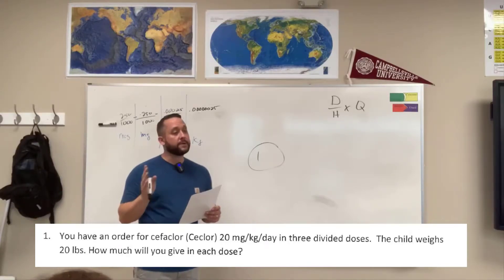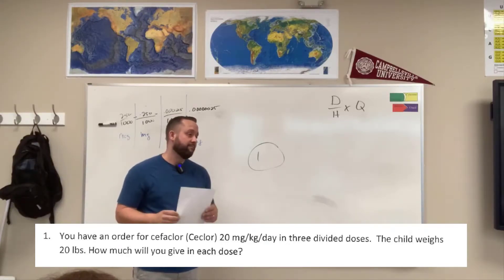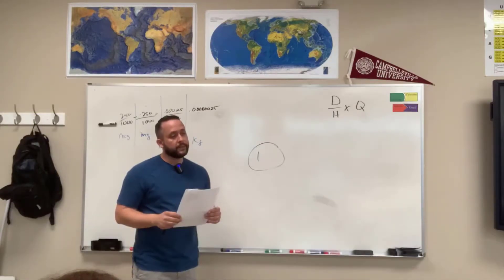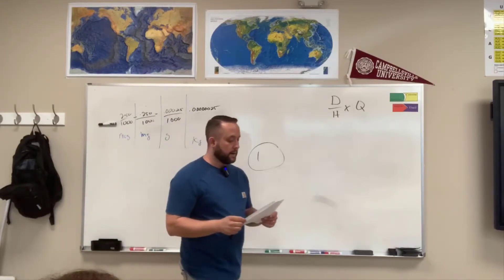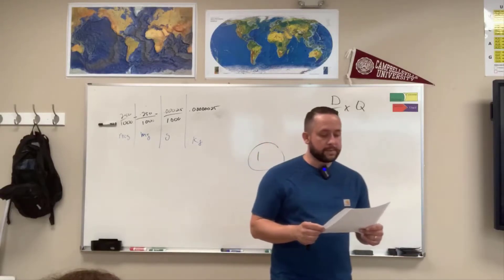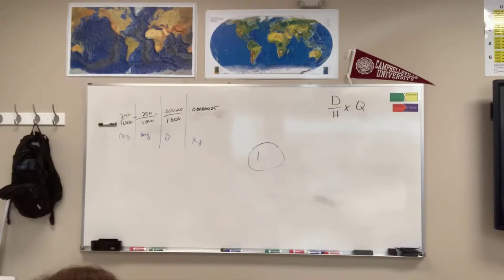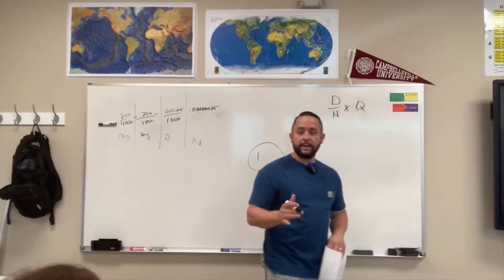Who wants to guess at what the first piece of information we need is? There are a couple of different answers we have to get before we get to our final one. We're giving 20 milligrams per kilogram, but they give you the child's weight in pounds, so you need to convert pounds to kilograms.